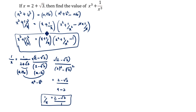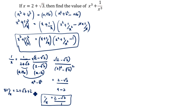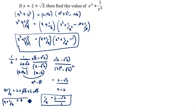Now we will find x plus 1 by x. x is 2 plus root 3 and 1 by x is 2 minus root 3. So x plus 1 by x is equal to 4.